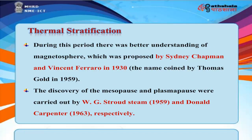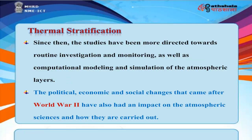During this period, there was better understanding of the magnetosphere, proposed by Sidney Chapman and Vincent Ferraro in 1930, with the name coined by Thomas Gold in 1959. The discovery of the mesopause and plasmapause were carried out by W.G. Stroud's team in 1959 and Donald Carpenter in 1963, respectively. Since then, studies have been more directed towards routine investigation, monitoring, computational modeling, and simulation of the atmospheric layers.